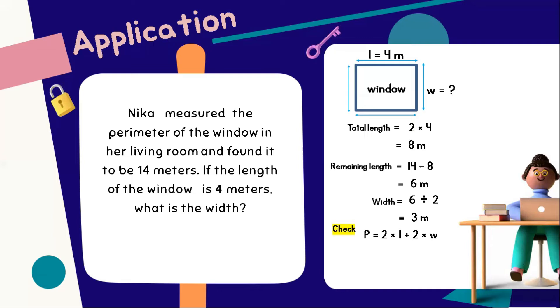Let us now check if our answer is correct by doing the checking process. Let us have the formula for the perimeter of a rectangle. 2 times length plus 2 times width. Let's substitute: 14 is equal to 2 times 4 plus 2 times 3. 14 is equal to 8 plus 6, and 14 is equal to 14. With this given process, we can say that the width of the window is 3 meters.